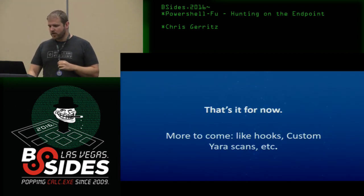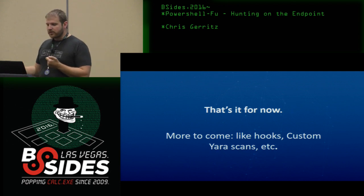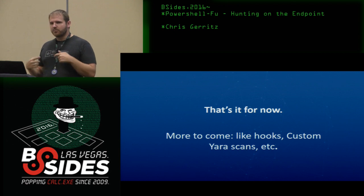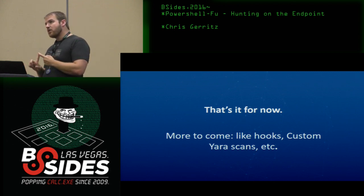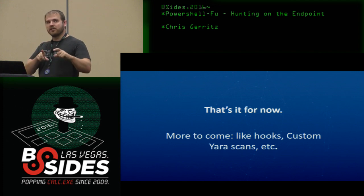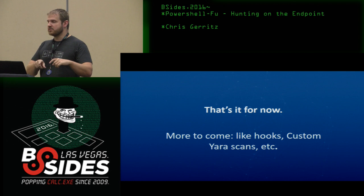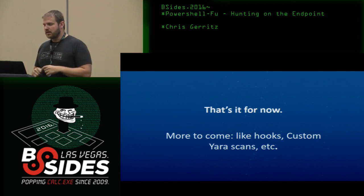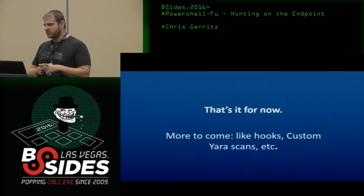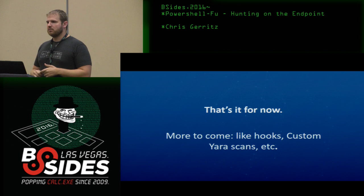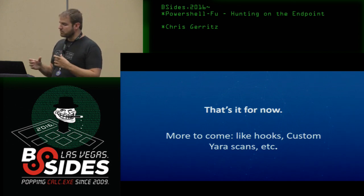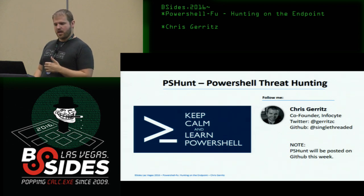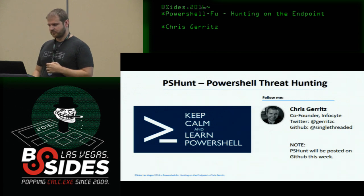That's it for now — more to come. Some things I'm working on: enumerating hooks, doing custom Yara scans, and being able to deploy that widely. This code set was actually what I showed our investors when I started my company, because we were doing this as a service, going out and doing these scans. We're open sourcing this now. It's an old toolset, about two years old, but I've updated it and will continue to maintain it. We'll be adding more techniques to find things on the endpoint. I'm at 30 minutes so I guess we have 15 minutes for questions.